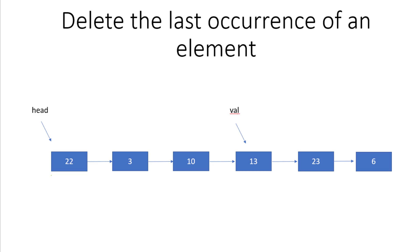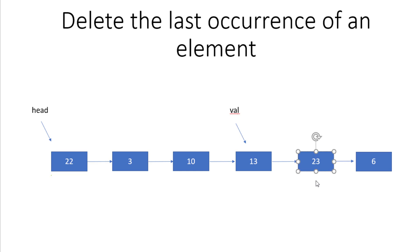Welcome to Coding Simplified. We are solving a new problem in linked lists: given a linked list, we need to delete the last occurrence of a given element. The focus is on the last occurrence. For example, if the value given is 13 and there are two 13s, we need to delete the last one.